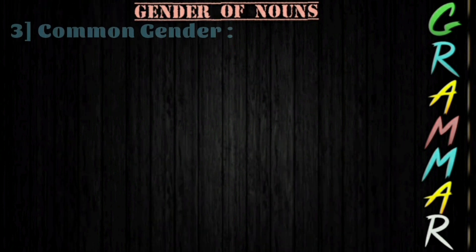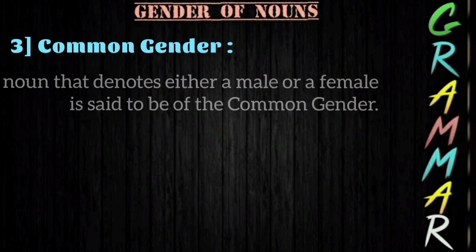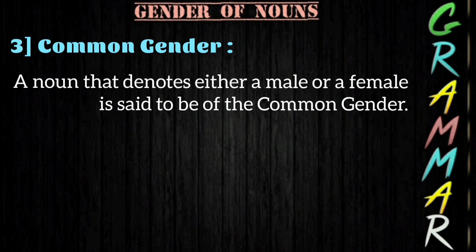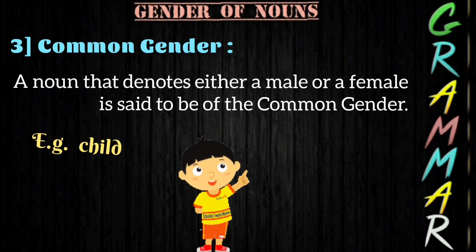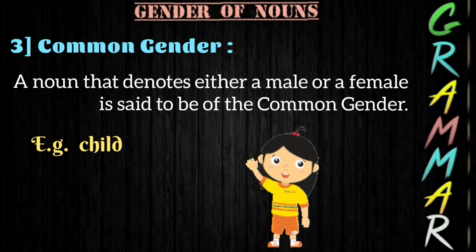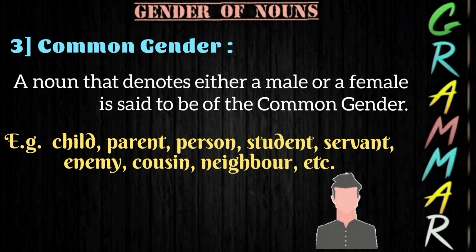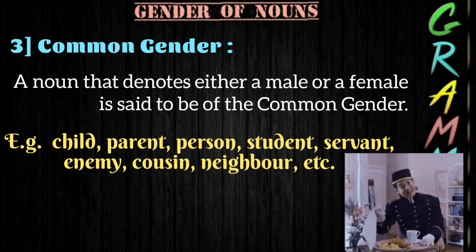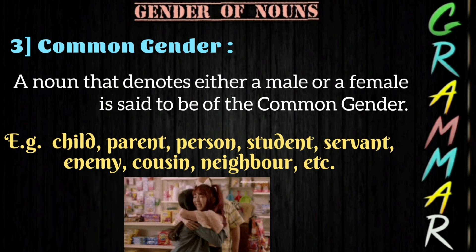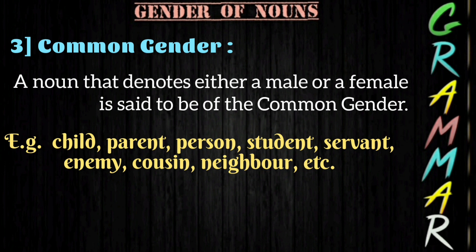The next type is common gender. A noun that denotes either a male or a female is said to be of the common gender. For example, the word 'child' denotes either a male or a female, so it is an example of common gender. Similarly, other examples are: parent, person, student, servant, enemy, cousin, neighbor, etc. If we use these words, they can refer to either a female or a male, so they are common gender.